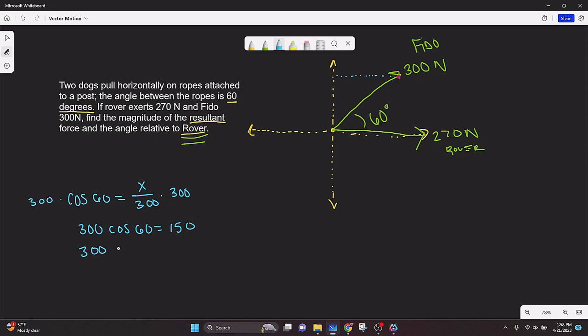Similar thing, but I'm going to do a little bit of shortcuts just to speed things up. This time, 300 sine of 60, and that is 259 newtons. So this right here is 150, 259.